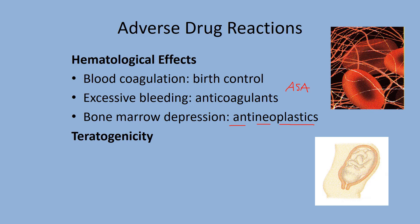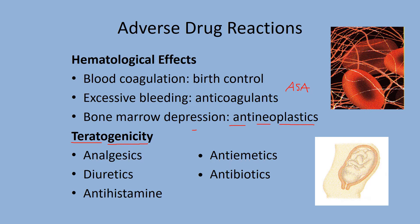Teratogenicity — 'terato' literally translates to monster and 'genicity' means making — so this refers to birth defects due to drugs. Many drugs can affect the growing fetus, so check with your doctor or pharmacist. One example was the thalidomide disaster in Europe. In the first trimester, women experience nausea and vomiting, and thalidomide was used for that, resulting in a whole generation born with severe birth defects.